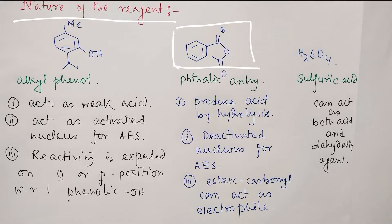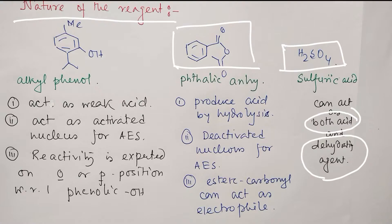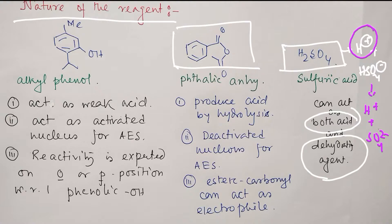Along with phthalic anhydride, sulfuric acid is provided. Sulfuric acid can act in two ways: as an acid and as a dehydrating agent. Sulfuric acid produces H⁺ plus bisulfate anion. Some may ask why bisulfate and not 2H⁺ + SO₄²⁻. Since we are not using aqueous solution but an organic medium, only the first protonation is highly favored; removal of the second proton is not as easy. So H⁺ is produced and can react with the anhydride.